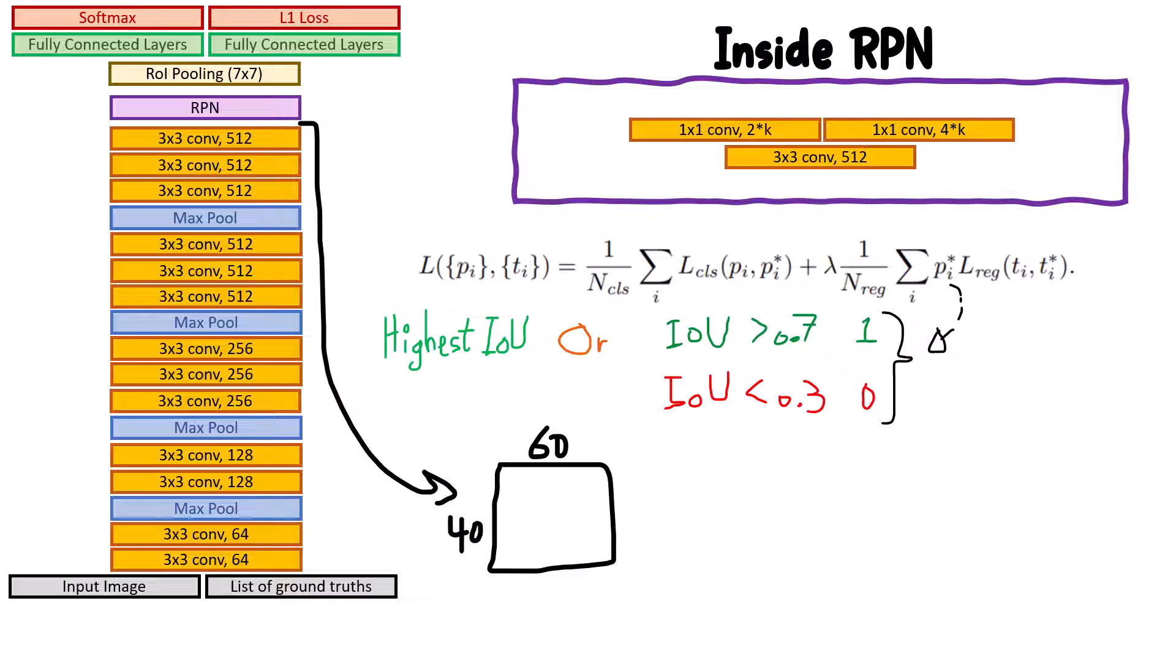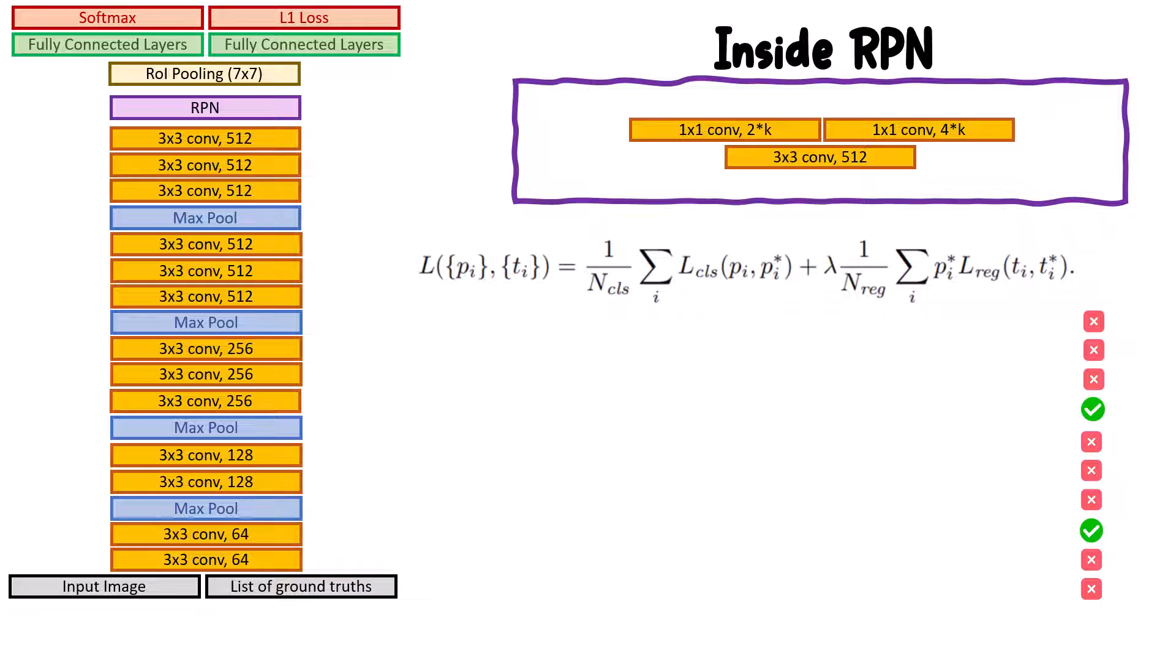The total number of positions would be 60 times 40, which is 2400. These are the positions, and in every position we have k anchors, meaning we have 2400 times k anchors, which is a lot. Of course, we do not have that many objects inside the image, so this arises a challenge.